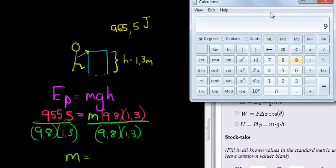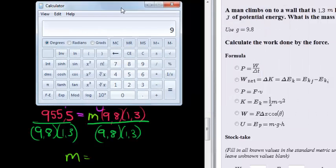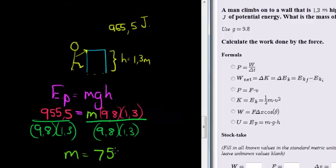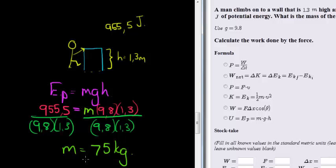We have 9, bring this closer. We have 955.5 divided by 9.8 and also divided by 1.3. 75.5, the mass of the man is a lovely 75 kgs.